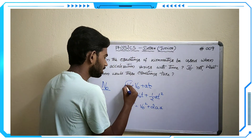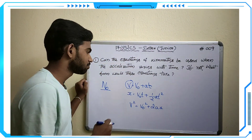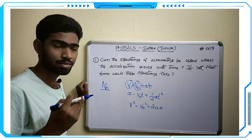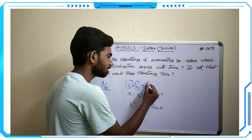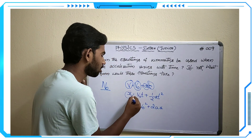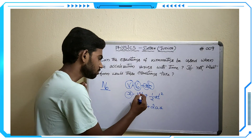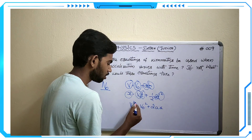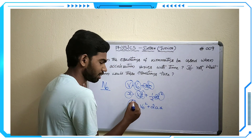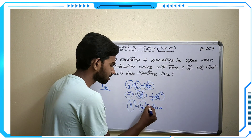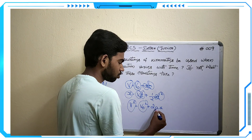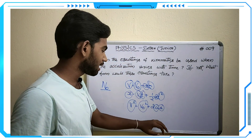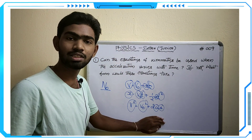In these equations: v is the final velocity at any time, v₀ is the velocity at time t = 0 (also written as u), a is acceleration, t is time, and x is displacement. So v² at any time equals v₀² (or u²) plus 2 times acceleration times displacement. These are the kinematic equations valid under uniform acceleration.